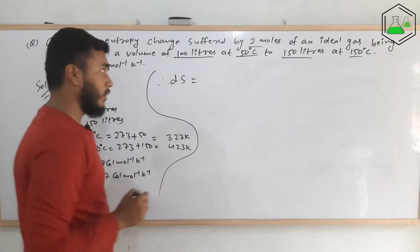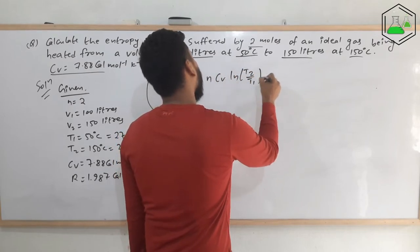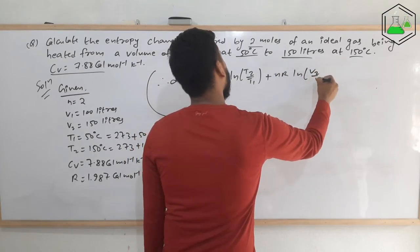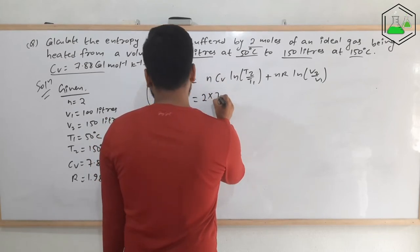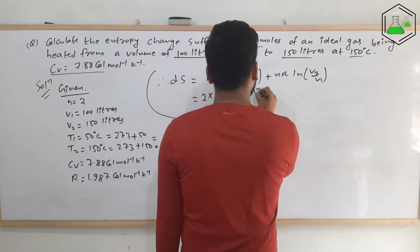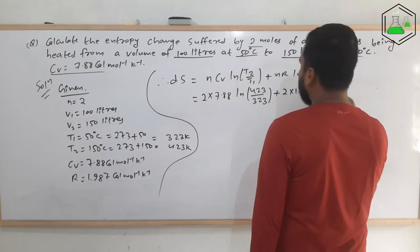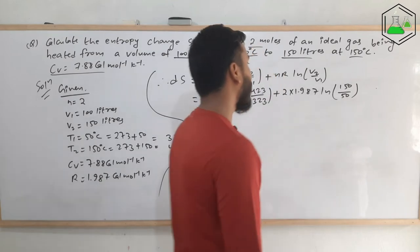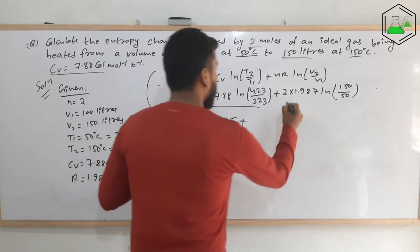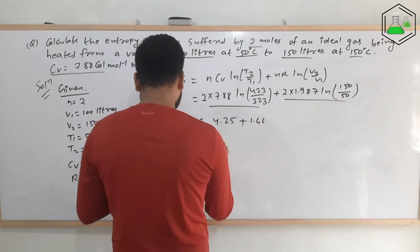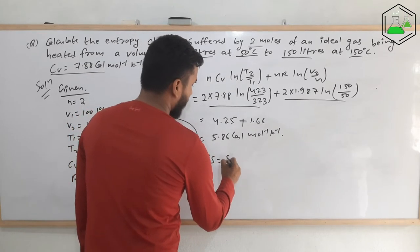Therefore, ΔS equals nCv·ln(T2/T1) plus nR·ln(V2/V1). Substituting values: ΔS equals 2×7.88×ln(423/323) plus 2×1.987×ln(150/100). The first term gives 4.25 and the second term gives 1.66. Adding them, we get ΔS equals 5.86 calorie per mole per kelvin. This is the value of the change in entropy for this particular question.